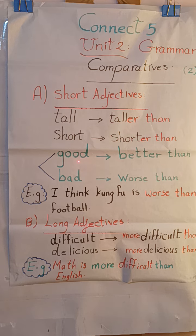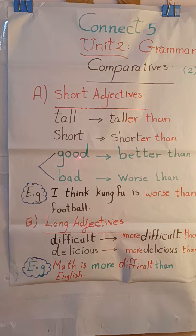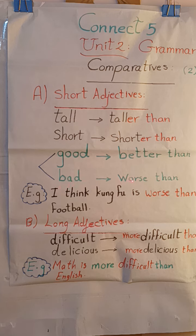Now look at the words 'good' and 'bad' — these are exceptions. The word 'good' doesn't take -er; instead I say 'better than.' And for the word 'bad,' when comparing between two things, I say 'worse than.' These are exceptions.